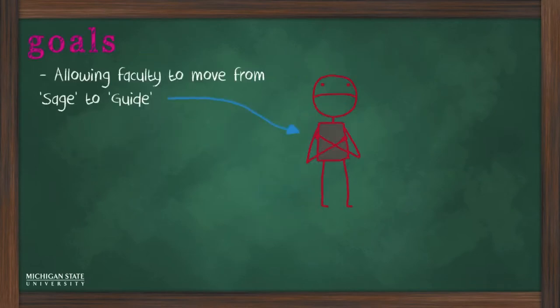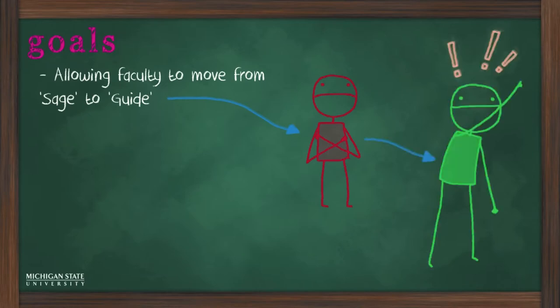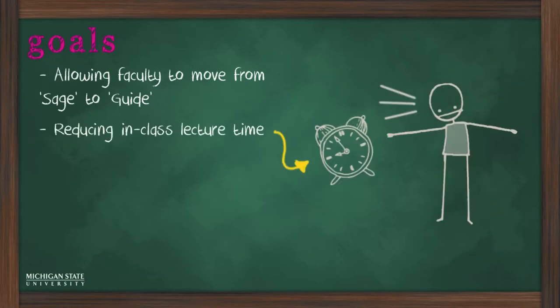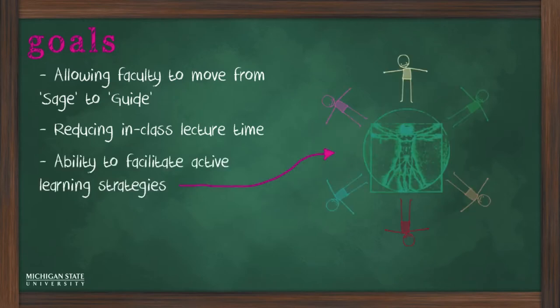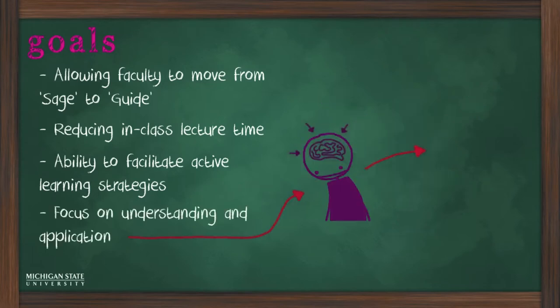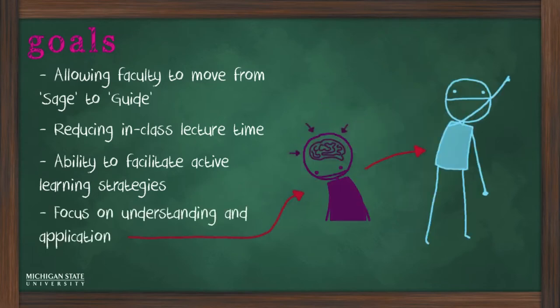Some of the goals of the flipped classroom model include finding an approach that would make it possible for faculty to move from sage to guide, reducing the amount of time spent in class on lecturing, opening up class time for the use of active learning strategies, and focusing more on understanding and application than on recall of facts, while not sacrificing presentation of the factual base.